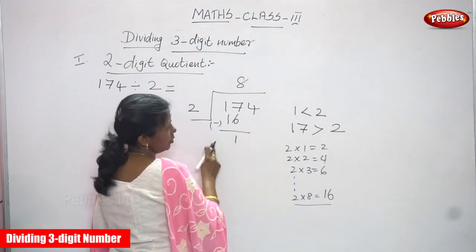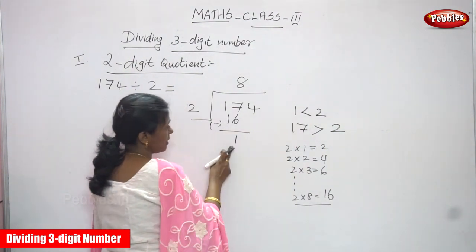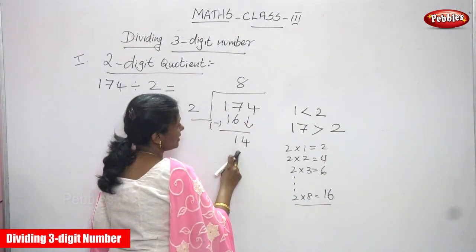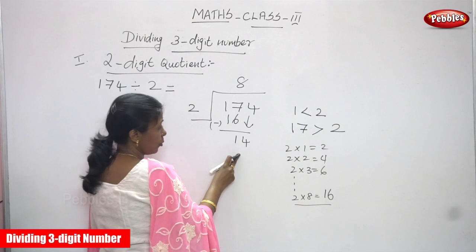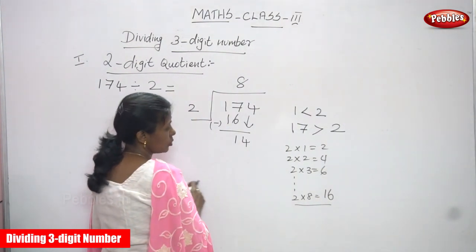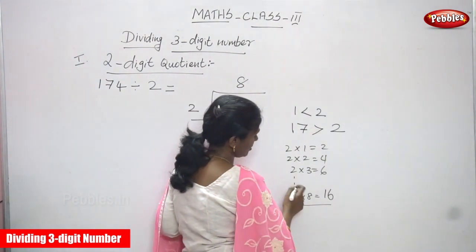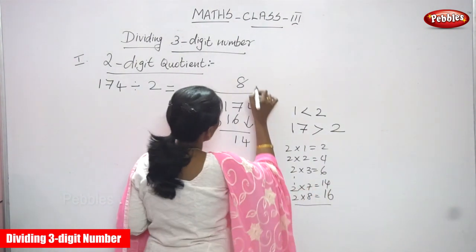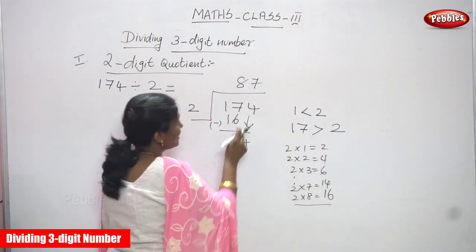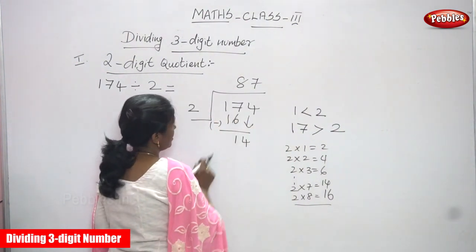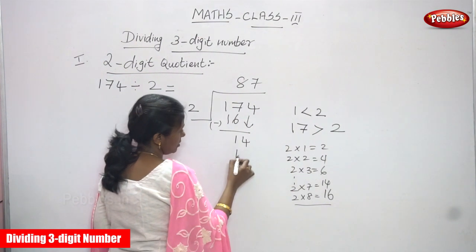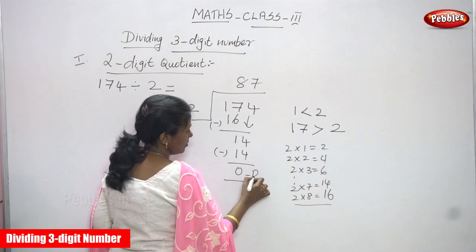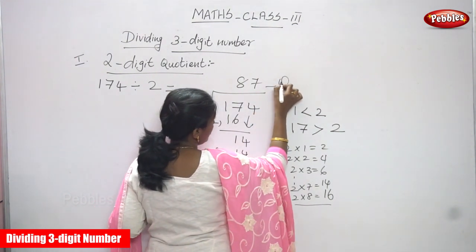Again, compare 1 and 2 — 1 is less than 2, it's not enough to divide. So you have to bring down the 4. Now it becomes 14. 14 is greater than 2, so it's enough to divide. Use the two-times table: 2 sevens are 14. Write 7 in the 1's place in the quotient. 14 minus 14 gives you 0.